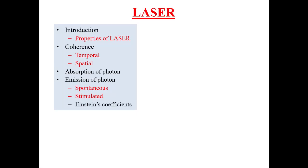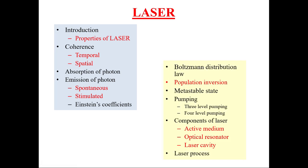In the previous lecture, we covered the properties of laser, discussing temporal and spatial coherence of light beams. The absorption and emission of photons were also discussed, covering spontaneous and stimulated emission. We also studied Einstein's coefficients. In this lecture, we will discuss Boltzmann distribution law essential for population inversion, the metastable state, pumping schemes, and the components of laser and the laser process.